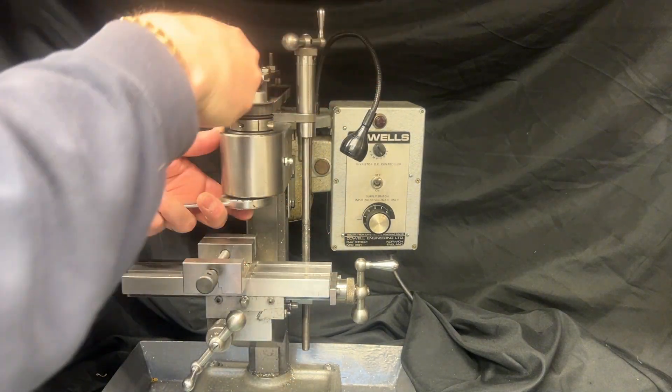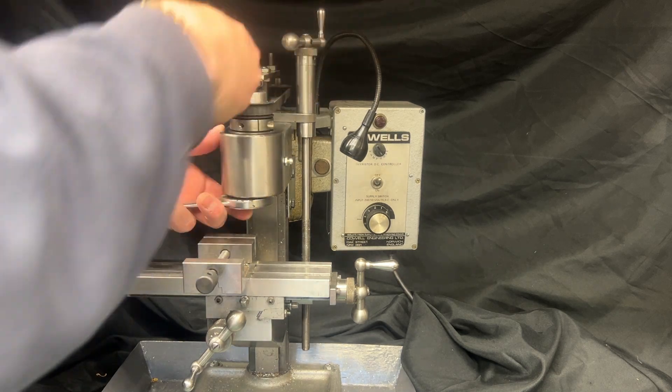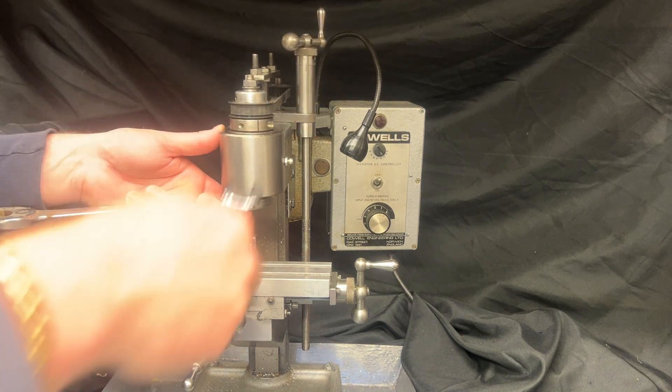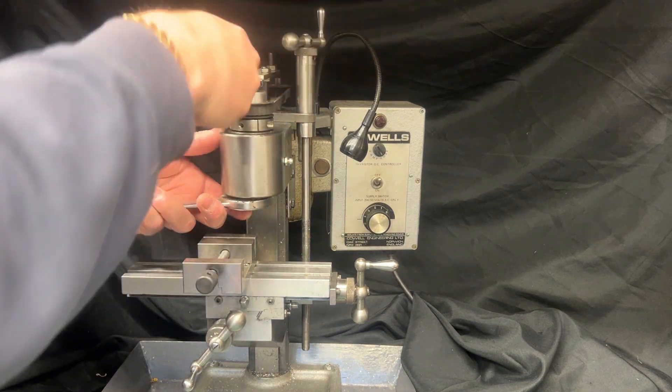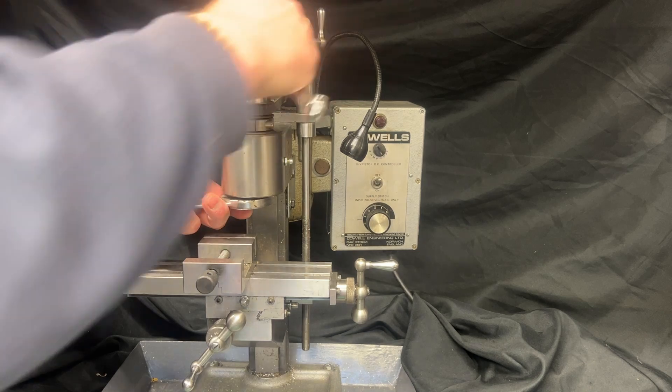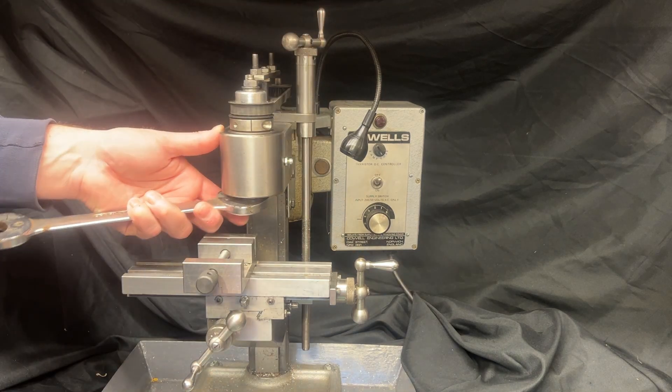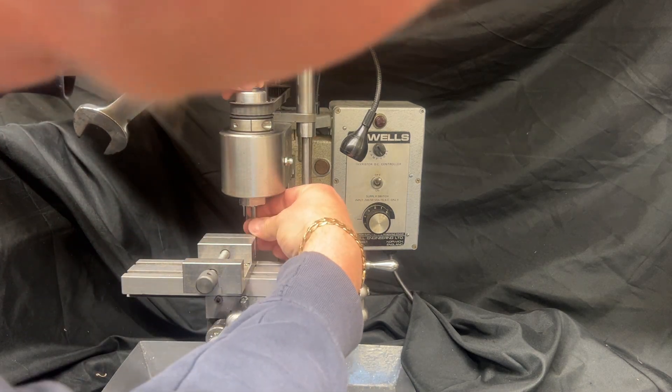You get both metric and imperial collets from Cowles and they cover most of what a model engineer or clockmaker would need, and they're beautifully made too. You do sacrifice the convenience of the clicking ER system but you're gaining precision and stability which I suppose is what this machine is all about.